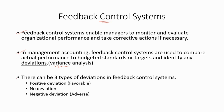There can be three types of deviations in feedback control systems. Positive deviations, these are known as favorable variances. When the actual performance and the budgeted performance are the same, there will be no deviation. And finally, negative deviations, these are known as adverse variances.